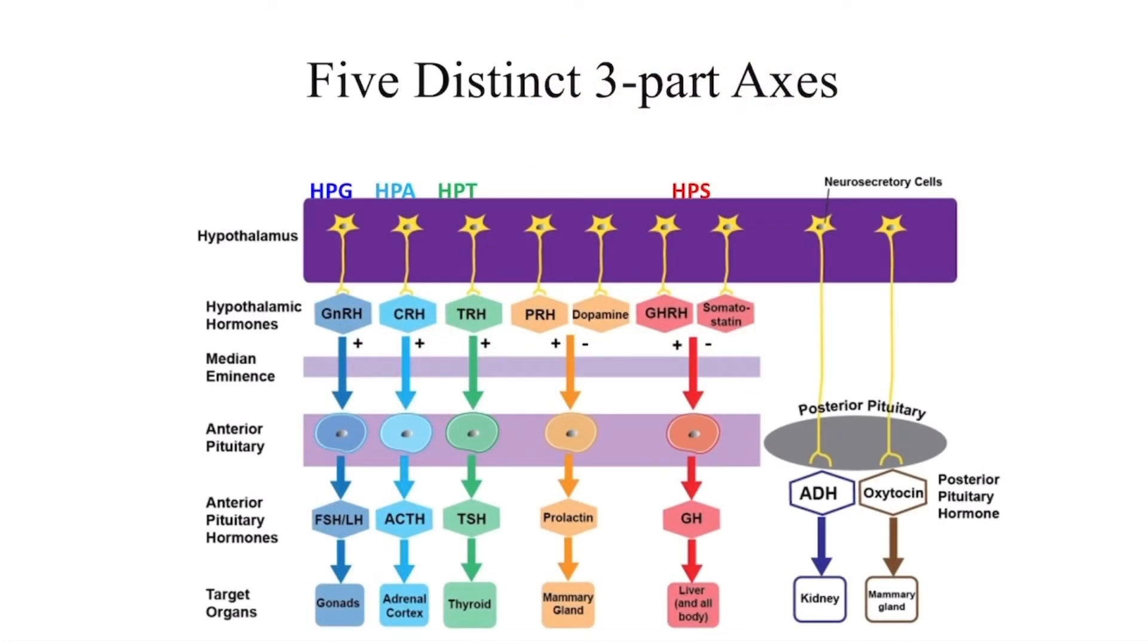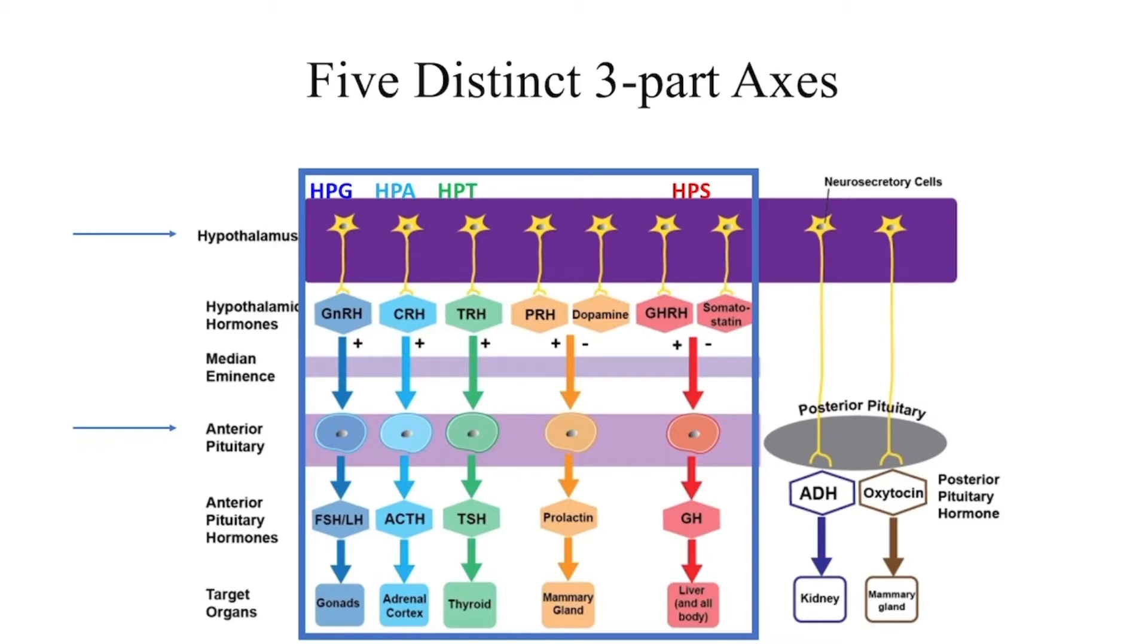There are a total of five distinct three-part endocrine axes involving the hypothalamus, anterior pituitary gland, and distant endocrine tissues. This video will cover one of these axes, the hypothalamus-pituitary gonadotropic or HPG axis.